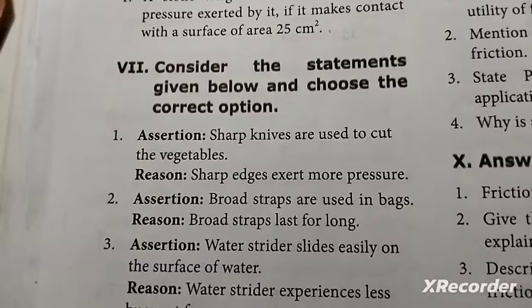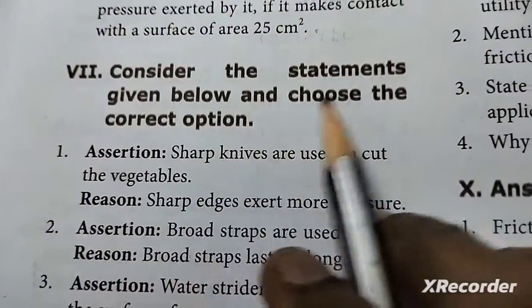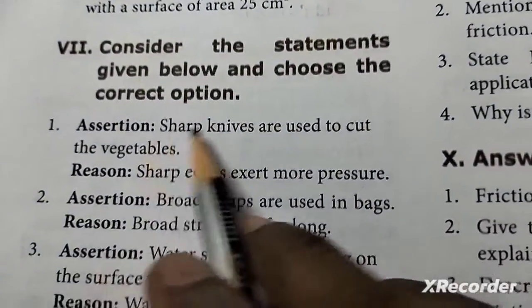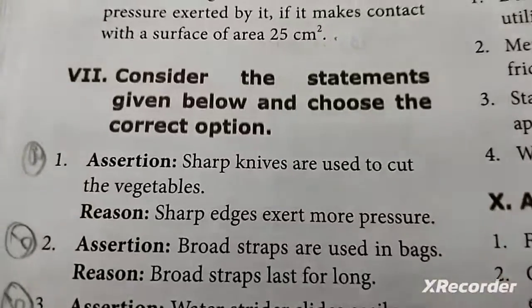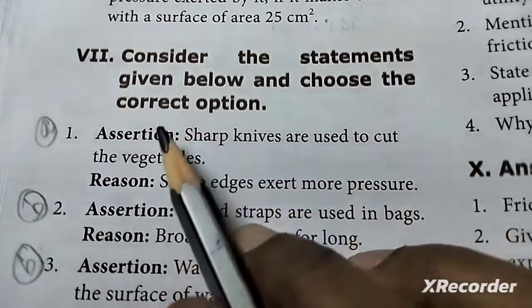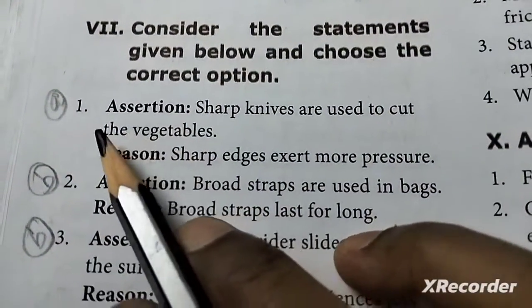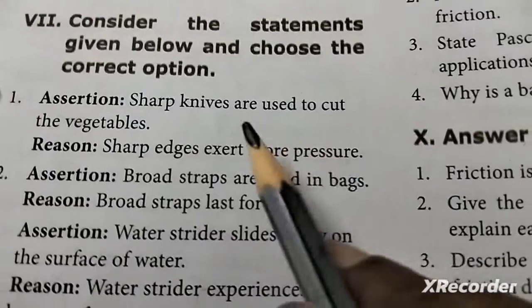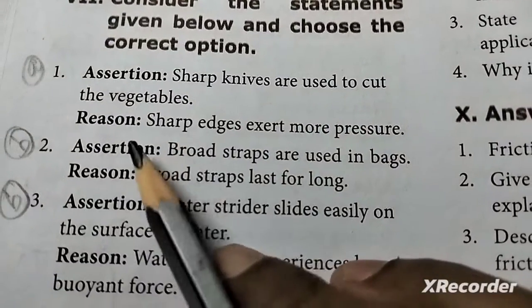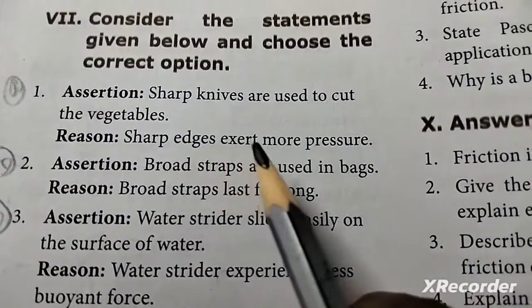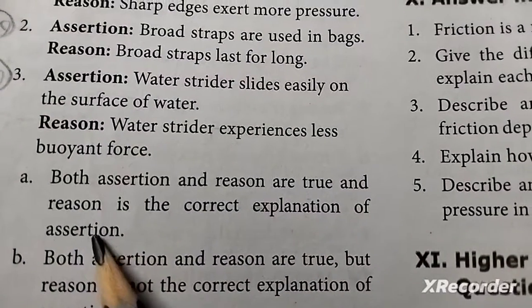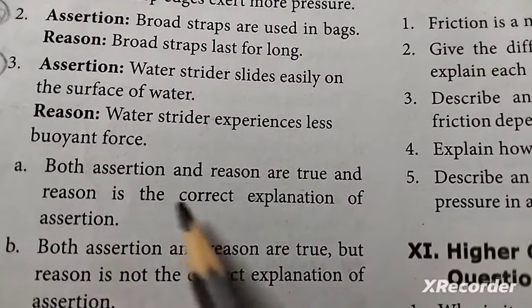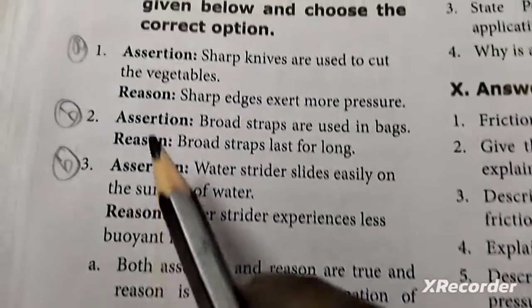Section seven: Consider the statements given below and choose the correct option. First: Sharp knives are used to cut vegetables because the sharp edge exerts more pressure — answer: Both the assertion and reason are true, and reason is the correct explanation of the assertion.